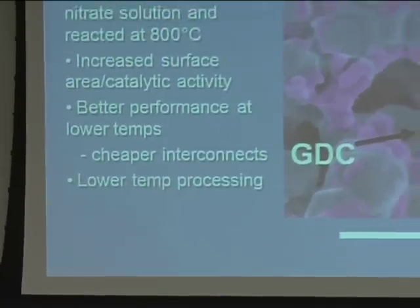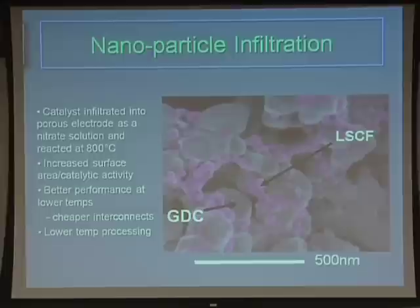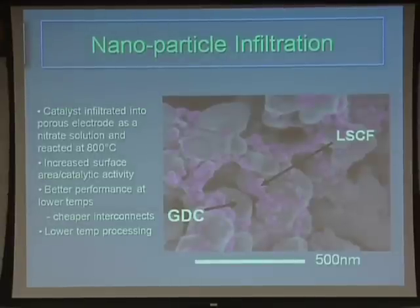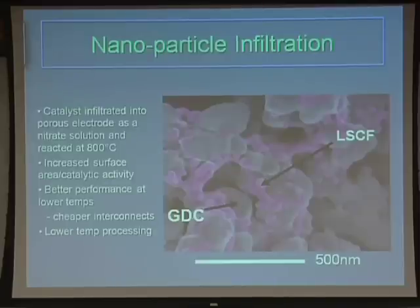Another method for nanoparticle formation is through infiltration. We basically have a scaffold of our oxygen ion conductor and infiltrate nitrate solutions of the elements involved in the electrocatalyst particle, and we react them at 800 degrees C. These form nano-sized particles — a little larger than the precipitation ones, maybe on the order of 50 nanometers — inside the electrode. The advantage of having these nanoscale electrocatalyst particles is increased surface area and hence catalytic activity, giving better performance at lower temperatures, which also reduces the propensity for these particles to coarsen.